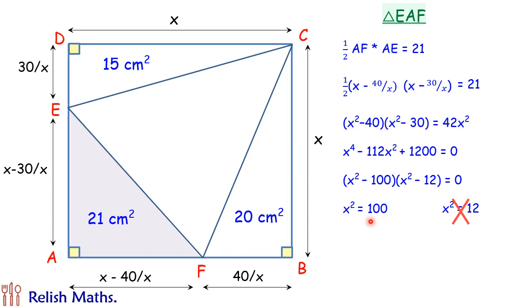So full square area is 100. We can find the area of this triangle by subtracting these areas from 100. So area of triangle is 100 minus 15 plus 20 plus 21. Solving it we'll get area of triangle as 44 centimeter squared. And that's our answer.